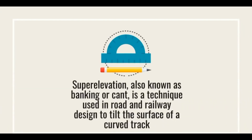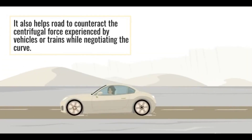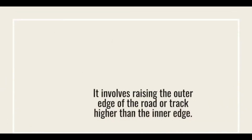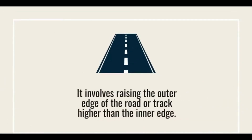Super elevation, also known as banking or cant, is a technique used in road and railway design to tilt the surface of a curved track. It helps roads counteract the centrifugal force experienced by vehicles or trains while negotiating a curve. It involves raising the outer edge of the road or track higher than the inner edge.